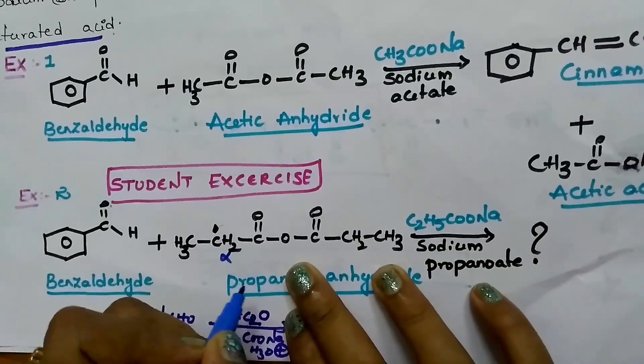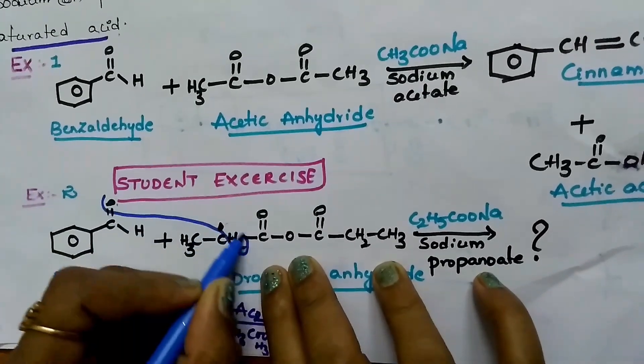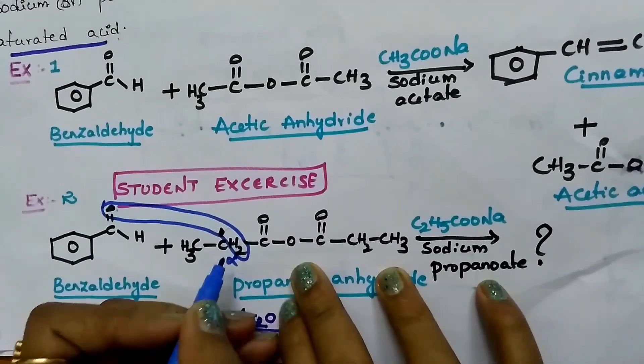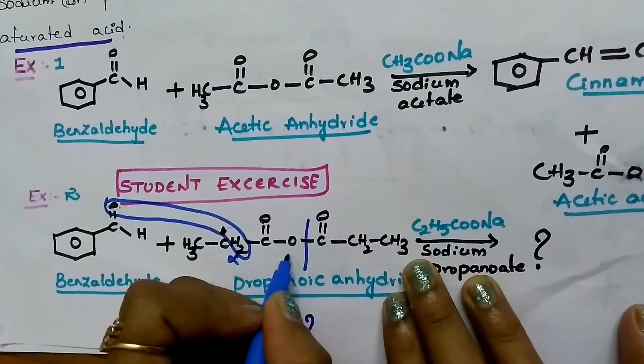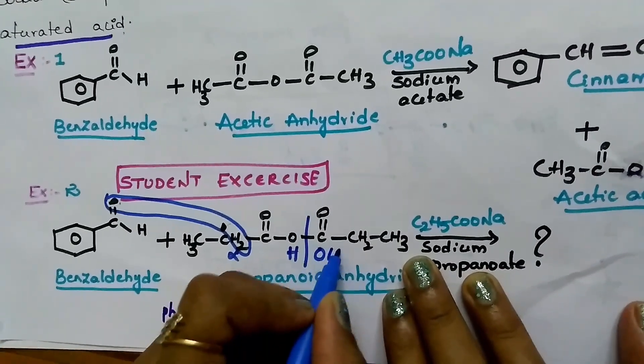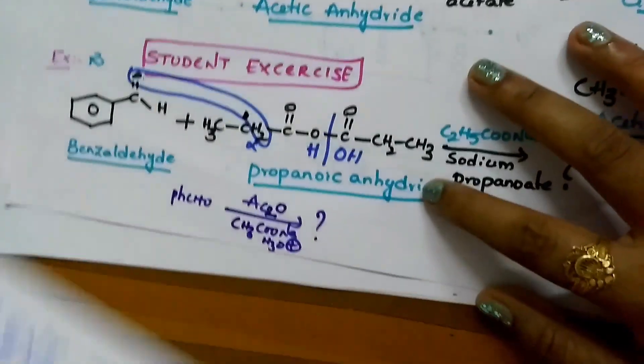This is alpha hydrogens. Remove two hydrogens and one oxygen from here as in water. Now, break this one and add that water molecule here. You will get the product that is C here.